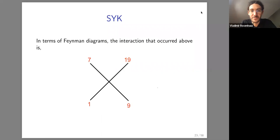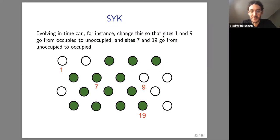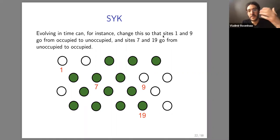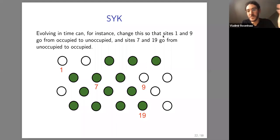A participant noted that the dynamics is on the space of binary sequences of length N (occupied/unoccupied), giving a 2^N-dimensional space. That's correct — the Hilbert space is 2^N-dimensional, with states labeled by the occupation numbers of each of the N sites. Of course it's quantum, so a general state is a superposition: alpha|0⟩ + beta|1⟩ for each site. It's the superposition that makes it much harder than classical physics.